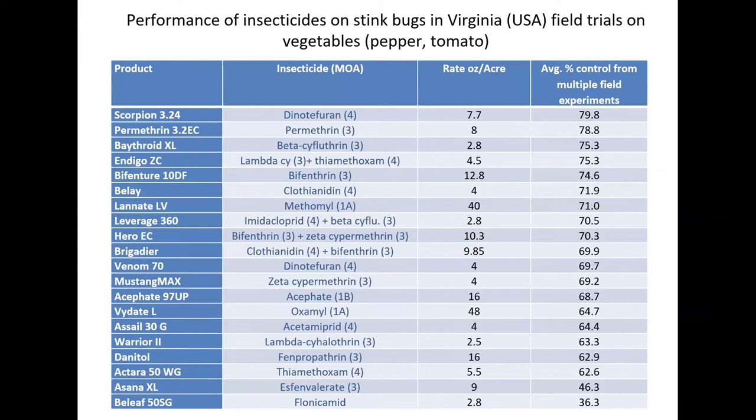Across multiple trials, dinotefuran — one of the neonicotinoids — seems to be one of the best and is labeled on tomatoes and some other crops. Among the pyrethroids, bifenthrin, permethrin, and Danitol XL are all performing equally well. There are a lot of options out there that we've tested.